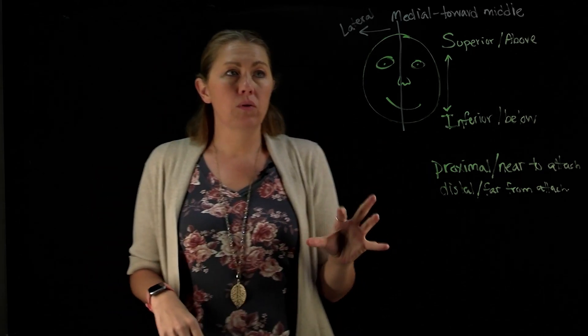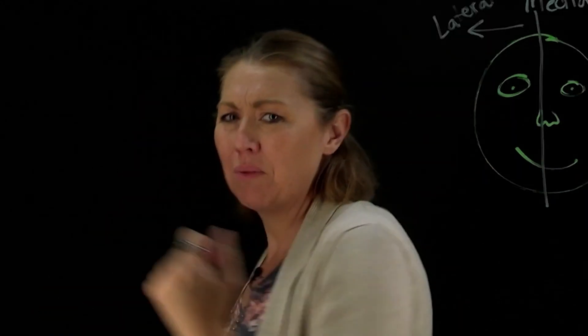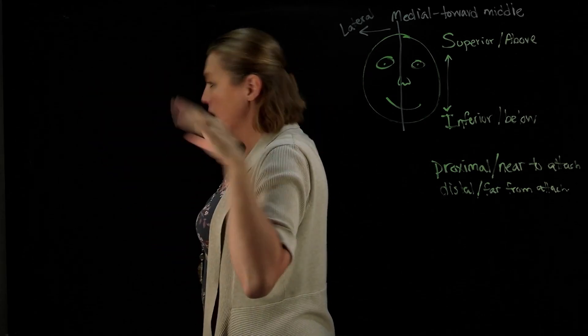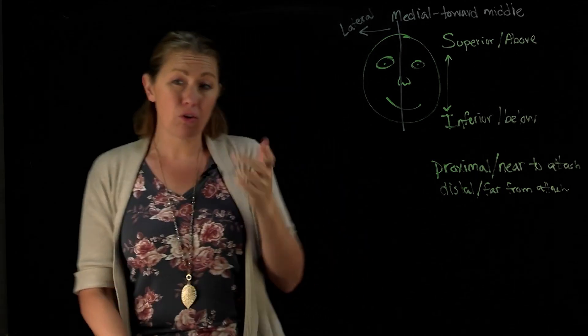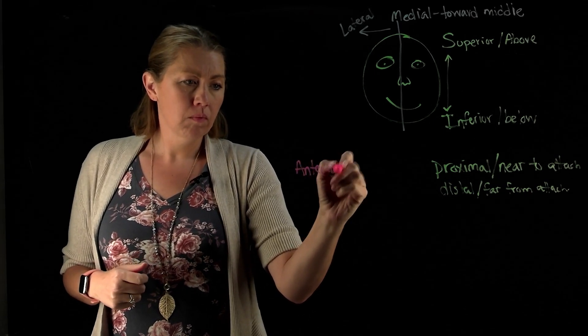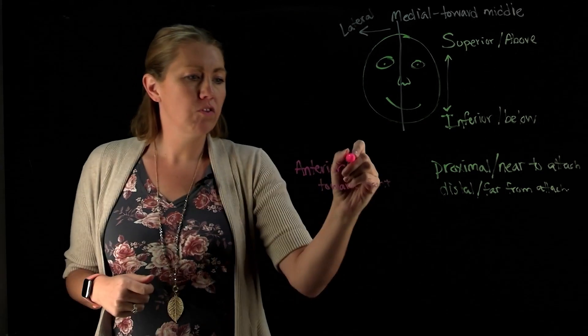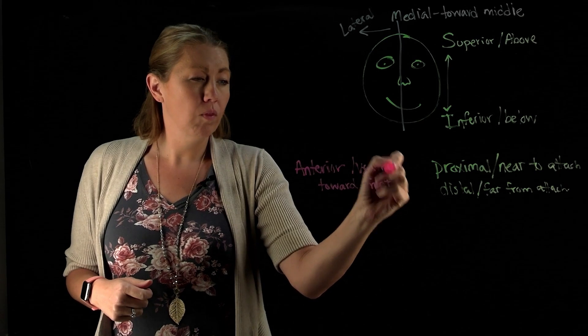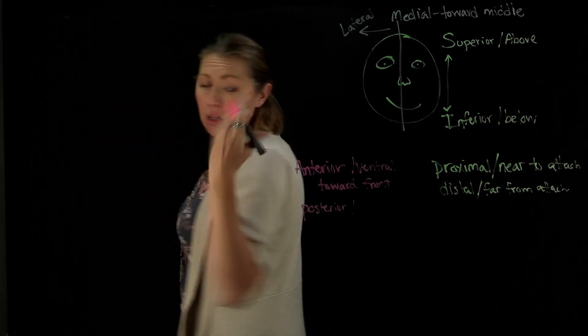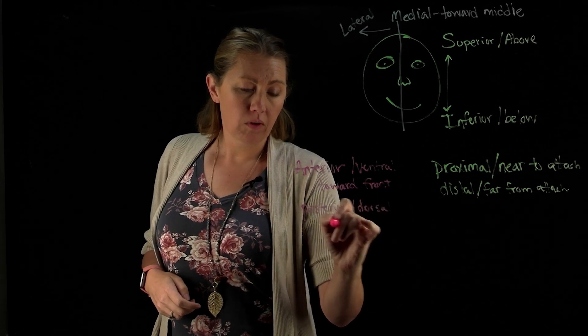Another set of terms that we can use would be front to back. So I'm going to, again, I'm going to turn me. So front towards the front, anterior towards the back, posterior. Another term that you could use for these, so there are alternative names. So anterior towards the front can also be called ventral. Those are interchangeable terms. Posterior, so that's the back, is also referred to as our dorsal side. So these are going to be the towards, the back terms.